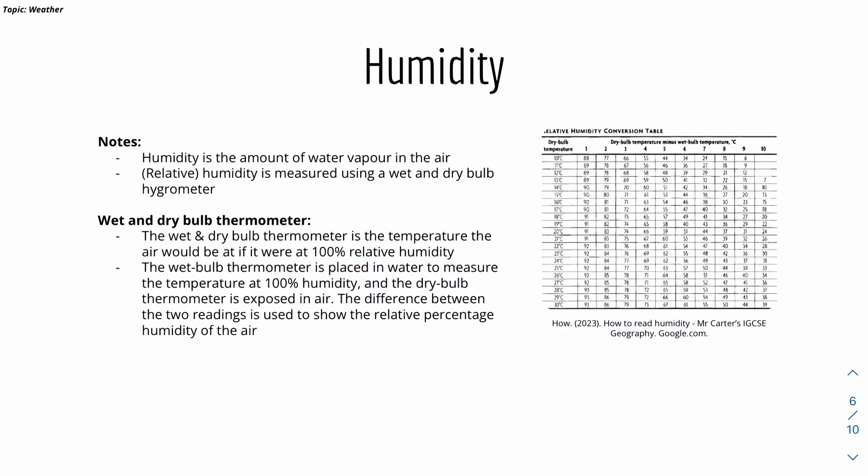The dry bulb thermometer is exposed in air. Then we can basically take the readings, the difference in readings between those two readings. That can be used to find the relative percentage humidity of the air using this table right here.